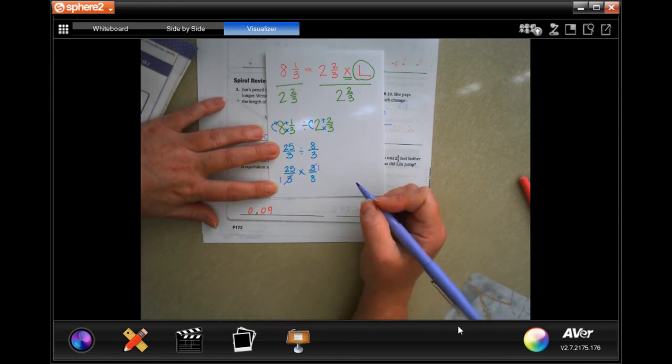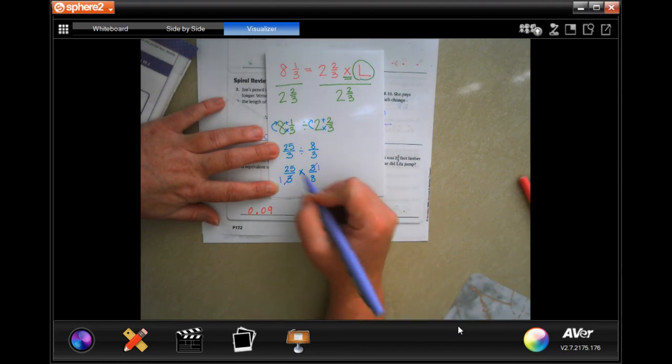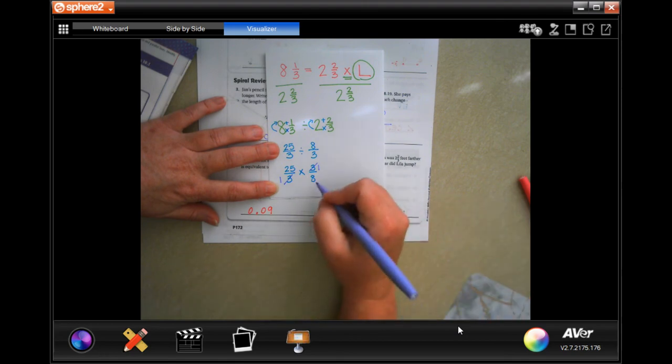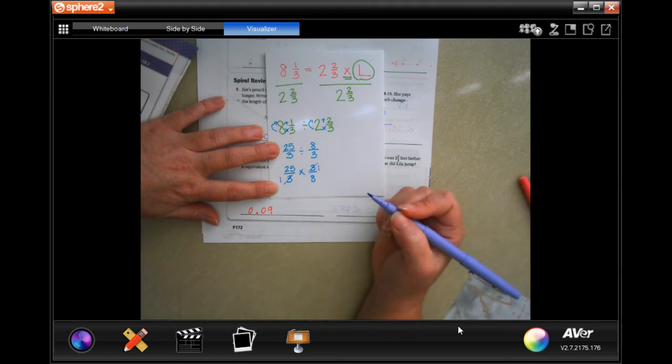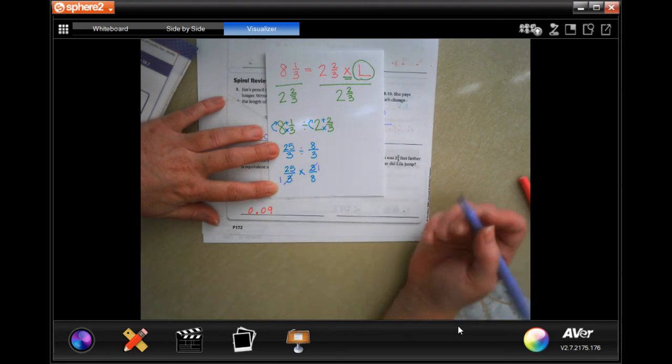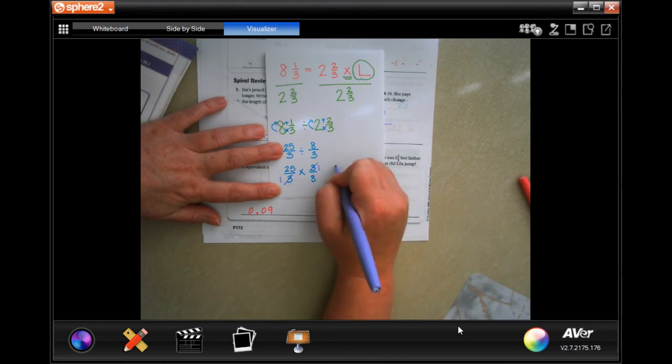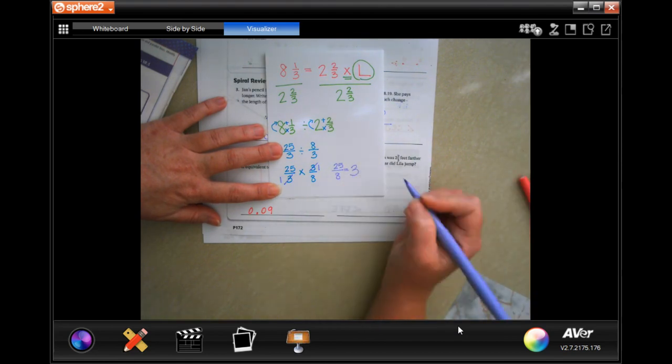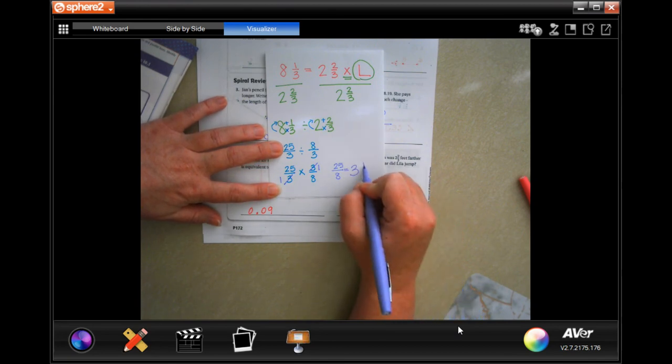Now I'm going to reduce the threes. Three goes into three once on both of those. Eight doesn't go into 25 evenly. Now I'm going to multiply straight across, I'm going to get 25 over 8. When I turn that back into a mixed number, eight goes into 25 three times which is 24. 25 minus 24 is 1, and I keep my denominator.